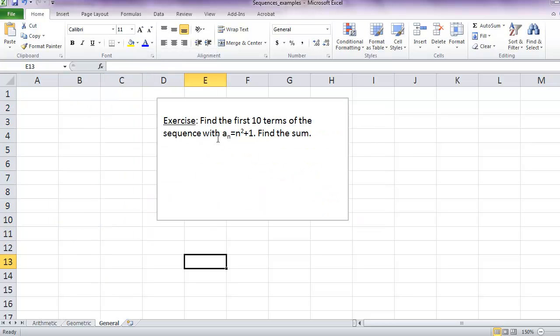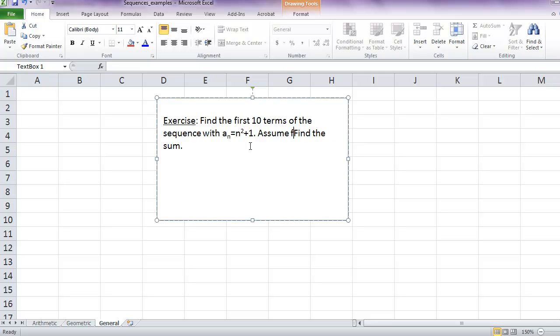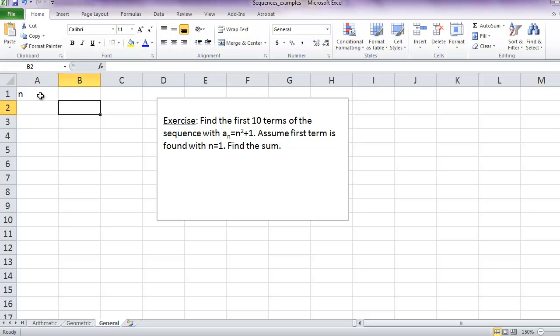Lastly, let's take a look at an example that's neither an arithmetic nor a geometric sequence. So let's find the first ten terms of the sequence defined as follows, and let's assume that the first term is found with n equals 1. We could perhaps assume that, but I wanted to make that explicit. Okay, so we'll do our fill down with the series.